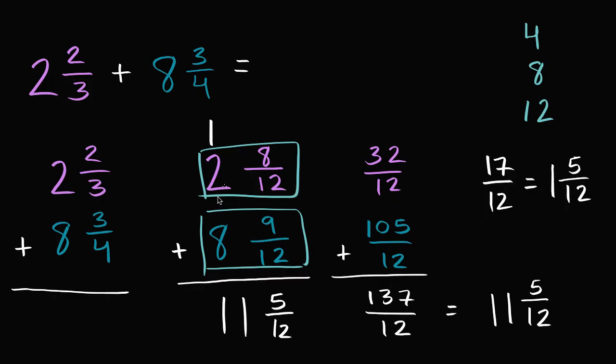So you could have done it either way. I think the way we did it the first time would have been a little bit easier, because you didn't have to deal with these really big numbers like a hundred thirty-seven and a hundred-five and thirty-two, and you just dealt with more straightforward numbers. You say, eight twelfths plus nine twelfths is seventeen twelfths, which is the same thing as one and five twelfths. And then you add one and five twelfths plus two plus eight, that's gonna give you eleven and five twelfths.